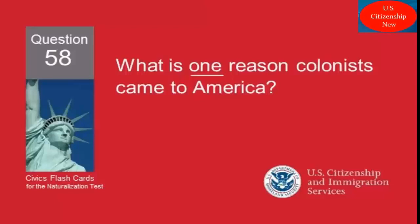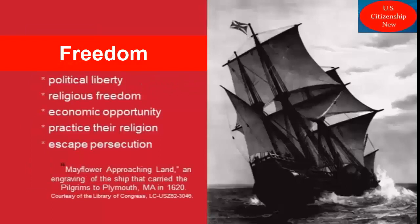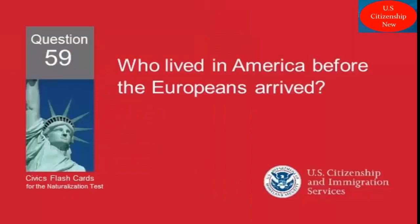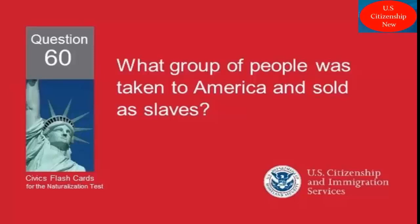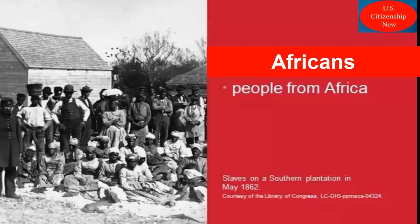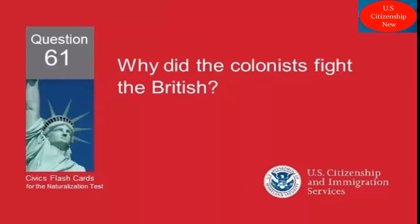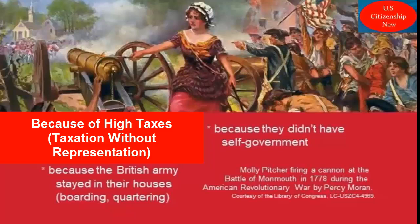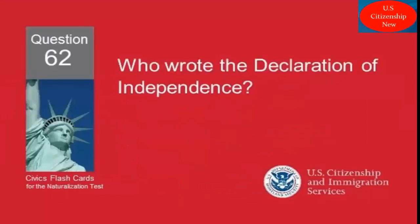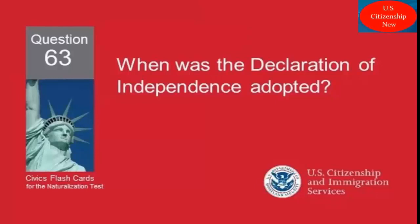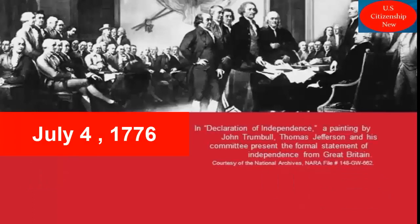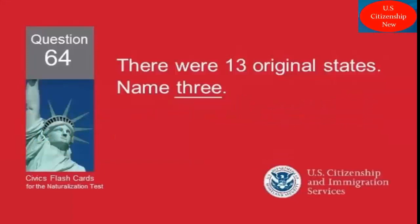What is one reason colonists came to America? Freedom. Who lived in America before the Europeans arrived? American Indians. What group of people was taken to America and sold as slaves? Africans. Why did the colonists fight the British? Because of high taxes. Taxation without representation. Who wrote the Declaration of Independence? Thomas Jefferson. When was the Declaration of Independence adopted? July 4th, 1776.